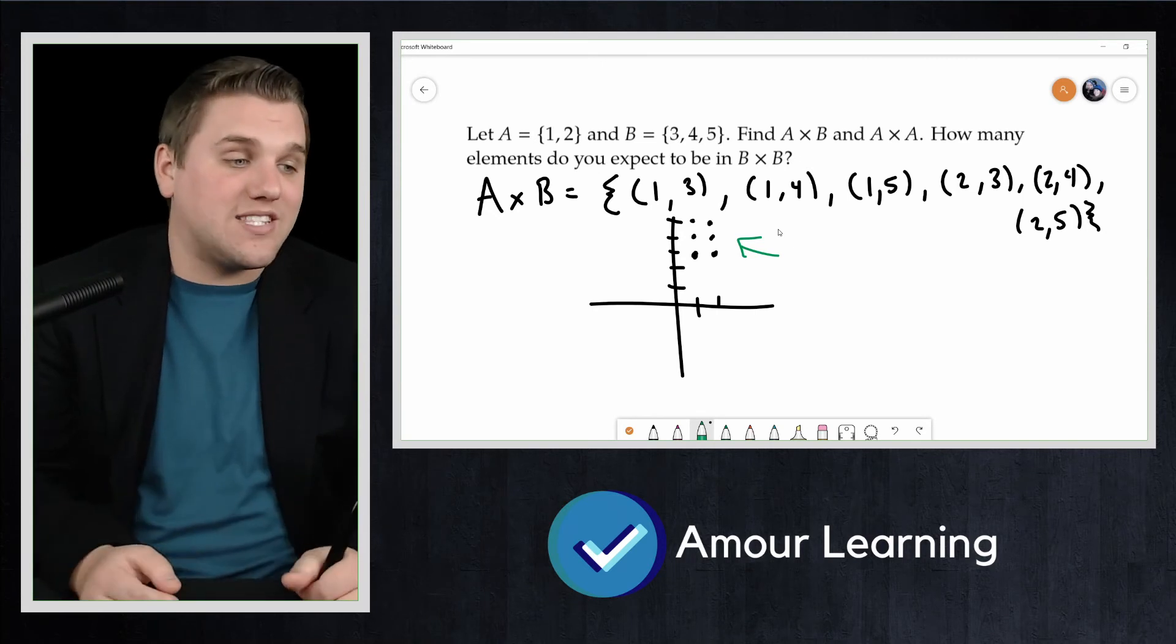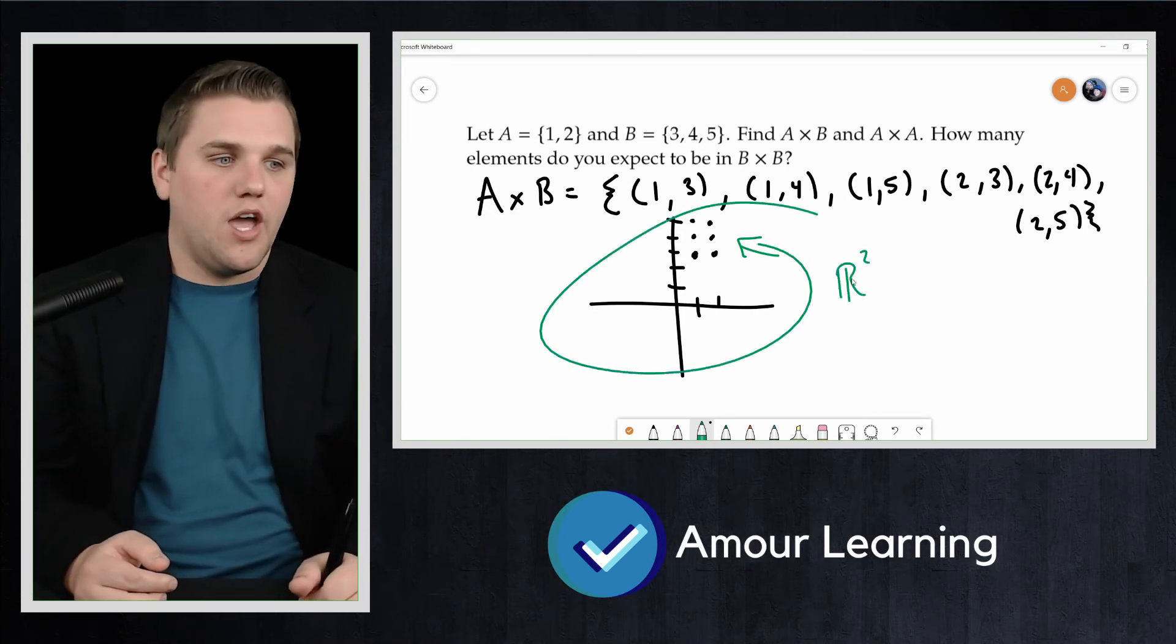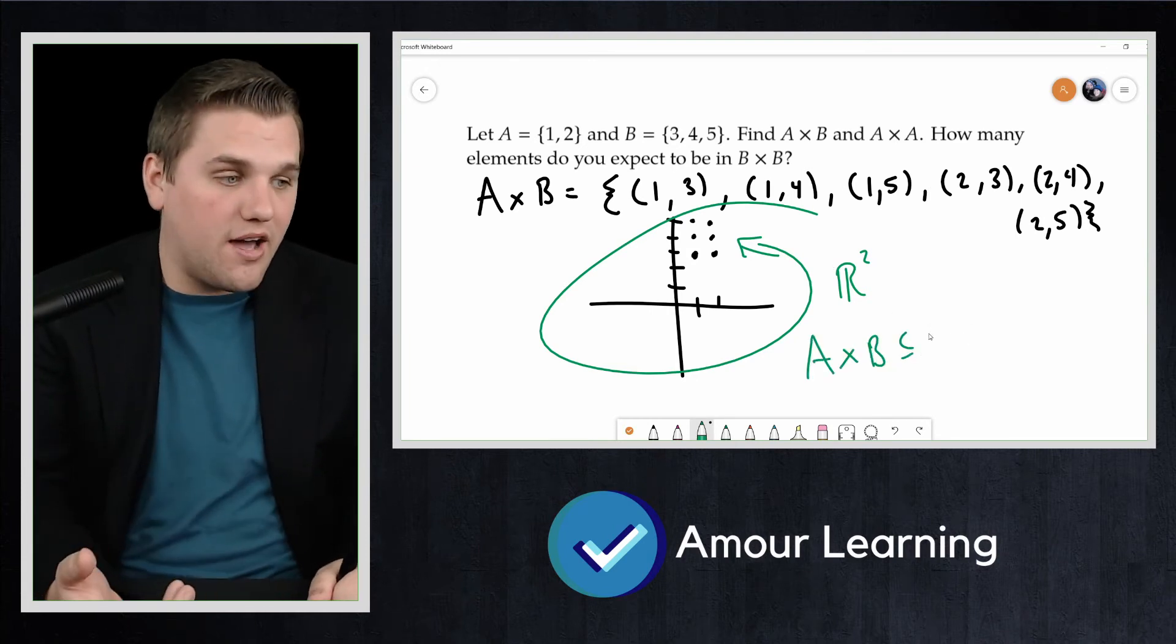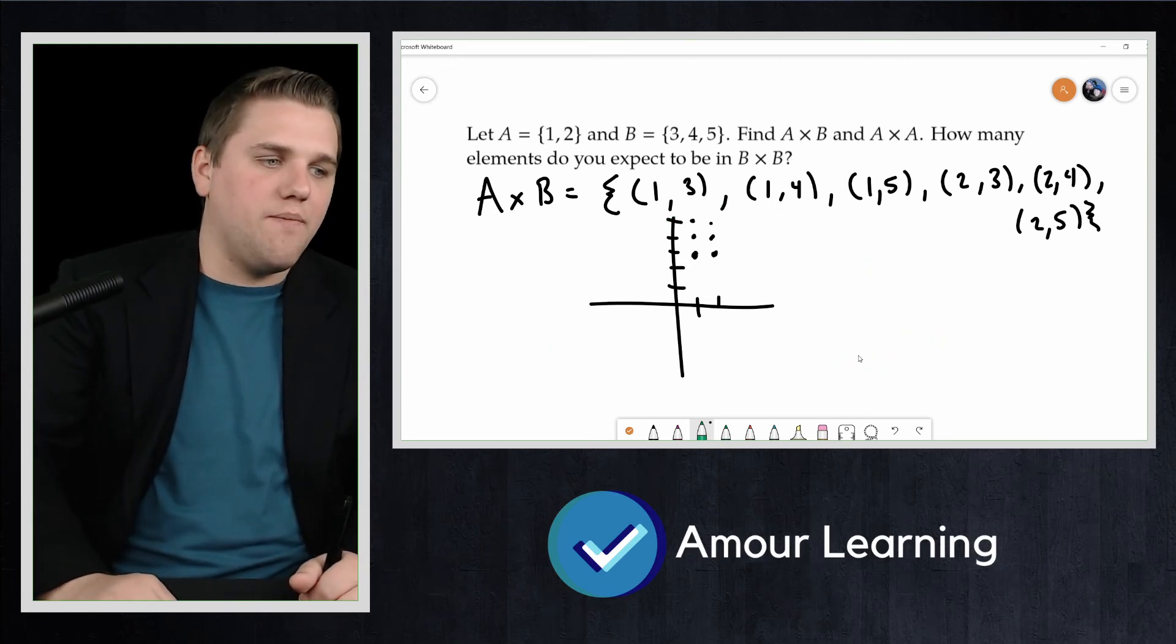And if you notice, I drew that inside this whole thing, which is R². And so you could say A cross B lives inside as a subset of R squared. And this is, in fact, true. Anyways, let me go back to A cross A now.